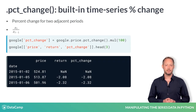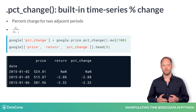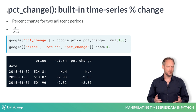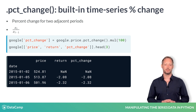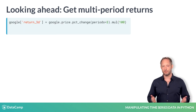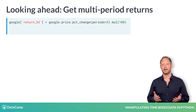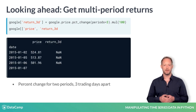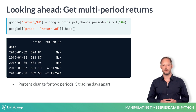Finally, since it is such a common operation, Pandas has a built-in method for you to calculate the percent change directly. Just select the column and call pct_change. Multiply by 100 to get the same result as before. All these methods have a periods keyword — which you have already seen for shift — that defaults to 1. If you provide a higher value, you can calculate returns for data points several periods apart, as in this example for prices three trading days apart.